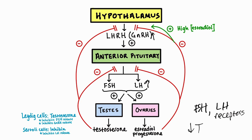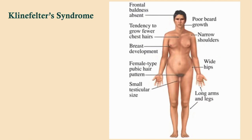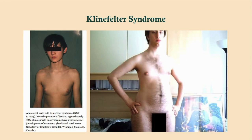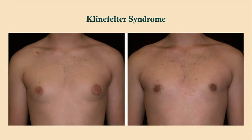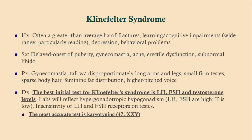What's going on here is a lack of FSH and LH receptors, meaning they're not going to respond to FSH and LH. As a consequence, they're going to have high GnRH and high FSH and LH due to loss of negative feedback, but low testosterone. We call this hypergonadotropic hypogonadism — the gonadotropic hormones are high because of loss of negative feedback. The best initial test is to get LH, FSH, and testosterone levels.